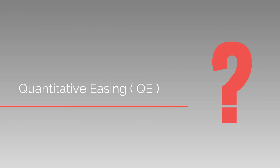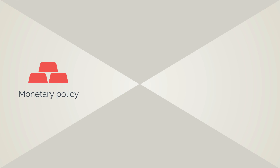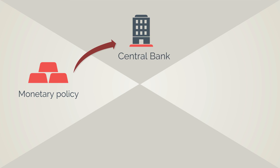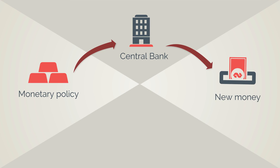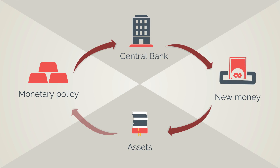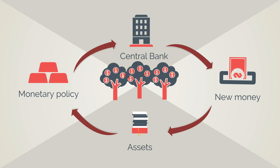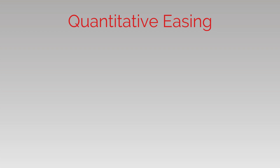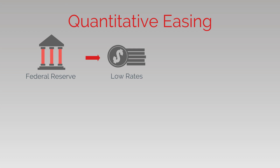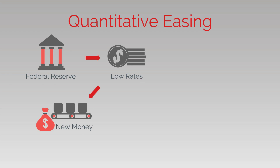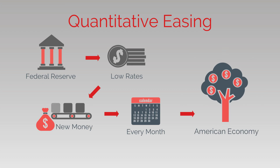What is the Quantitative Easing Program? It is a monetary policy in which a Central Bank creates new electronic money in order to buy government bonds or other financial assets to stimulate the economy. The rules of the game are simple — the Fed lowers rates and injects tens of billions of dollars every month into the economy.